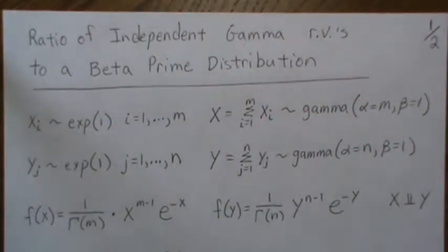Hello, in this video we're going to look at the ratio of independent gamma random variables and show that it is transformed to what's called a beta prime distribution.